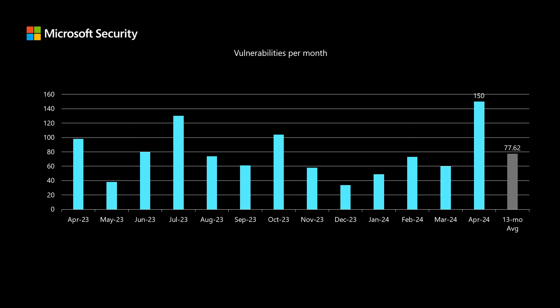We have 150 new vulnerabilities in today's release. That's the highest that I've recorded over the past five years, and it's almost twice the average of what we've been seeing over the past 13 months. I talk about the number of vulnerabilities each month, but that's merely a data point — it's not necessarily something that denotes risk. A high number of vulnerabilities doesn't necessarily indicate a high level of risk in the release; it's just a data point we can compare these releases to.